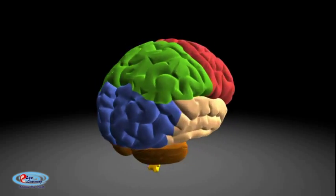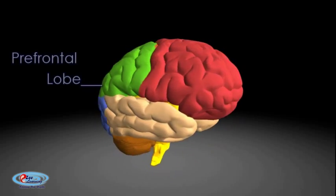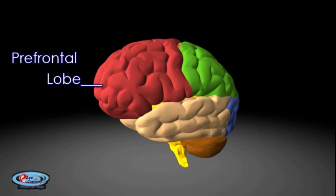Here in this animation. The prefrontal lobe is the anterior part of the frontal lobes of the brain.